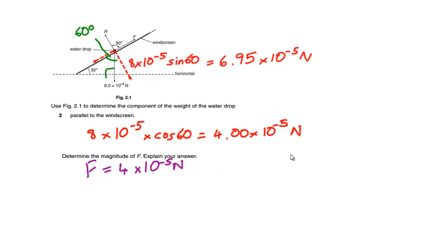To explain your answer you need to say that the object is in equilibrium, so therefore the forces acting up the slope — in this case the friction — are equal to the forces acting parallel to the slope, which is the component of the weight.